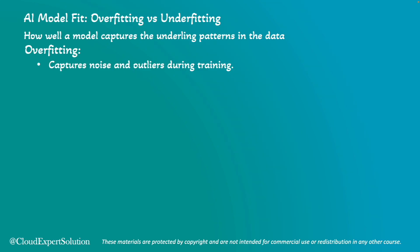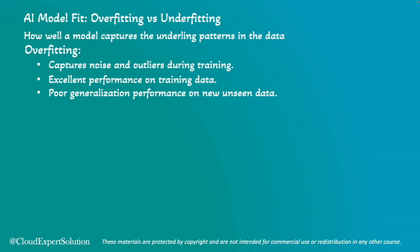Overfitting occurs when a model learns the training data too well, capturing noise and outliers, resulting in excellent performance on training data. However, when it comes to unseen or new data, the model provides poor, generalized performance. For example, imagine a student who memorizes answers to all the practice tests but struggles with new questions on the actual exam.